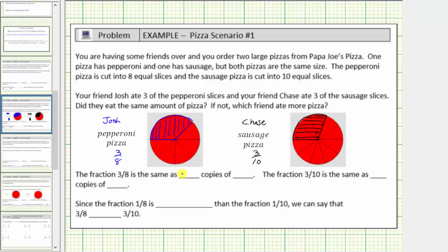The fraction of three-eighths is the same as three copies of one-eighth, and the fraction of three-tenths is the same as three copies of one-tenth.